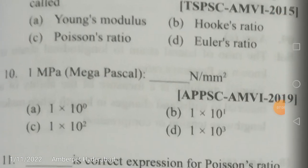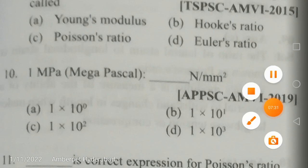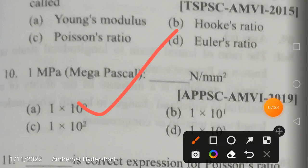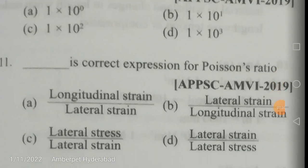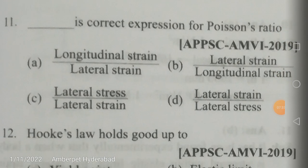One Mega Pascal is equal to one Newton per mm². Since anything raised to the power of zero equals one, 1 × 10⁰ = 1, so 1 MPa = 1 N/mm². The other options are only there to confuse. The correct answer is that one Mega Pascal equals one Newton per mm².